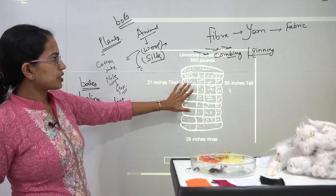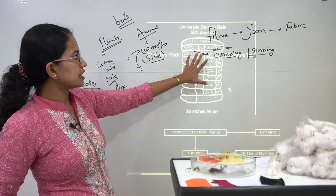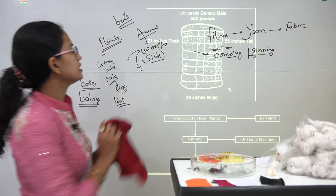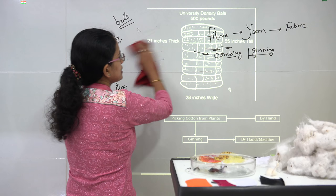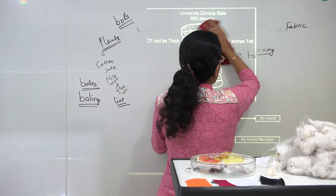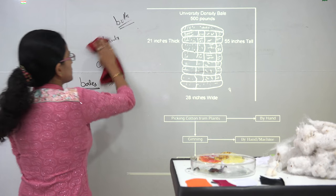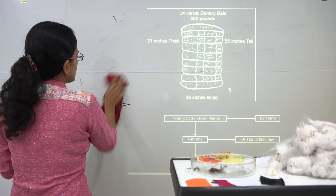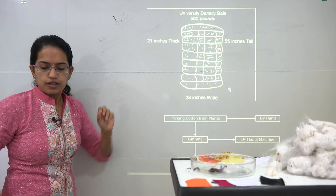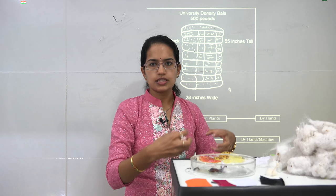A standard bale, what we call a universal density bale, is around 500 pounds, and the height and thickness are standardized. That's how a cotton bale is prepared and transported to industries.